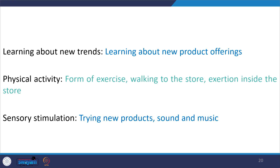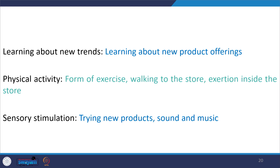Another personal motive is learning about new trends, also called idea shopping — where the whole objective of visiting markets or retail establishments is learning about new products. A further motive is physical activity — many people visit nearby stores or buy groceries and prefer walking, treating it as a form of exercise. Finally, sensory stimulation refers to the joy of trying new products and the stimulation from music and sounds played in stores, which plays a significant role in influencing mood and spending behavior.